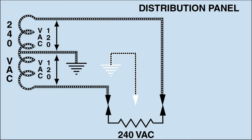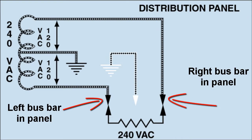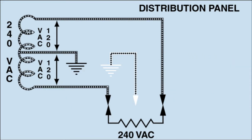A 240-volt load has no connection to neutral and does not need one. Current flow is from bus to bus, which is the same as saying from one end of the secondary to the other.